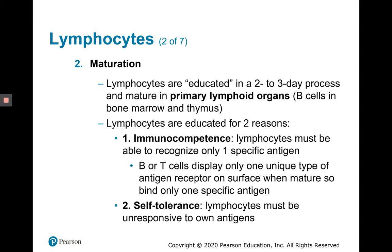Lymphocytes are educated for two reasons: immunocompetence and self-tolerance. We want to ensure that lymphocytes recognize only one specific antigen, so B or T cells that display only one unique type of antigen receptor on their surface are selected for. Self-tolerance is a test wherein lymphocytes must be unresponsive to their own antigens — we wouldn't want a B lymphocyte to recognize a self-antigen and attack it.